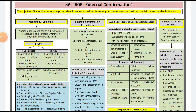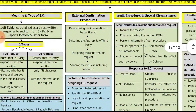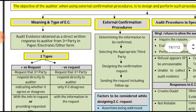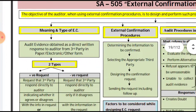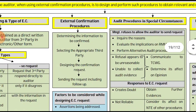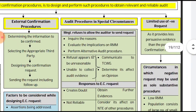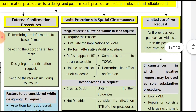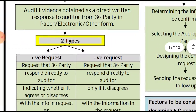Hello friends, this is Hatim Rampurawala, and in this video we will revise ISA 505 External Confirmation. It will be a quick recap of the entire ISA, divided into four parts: the meaning and types of external confirmation, the external confirmation procedure, procedure in special circumstances, and the limited use of negative confirmation requests.